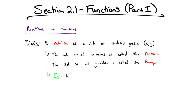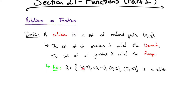Let's say you have the set R equals, in squiggly braces, four points: the point (-1, 2), the point (3, -4), the point (0, 2), and the point (7, 10). This is a relation — a set of four ordered pairs. The domain is the collection of all x values: -1, 3, 0, and 7.